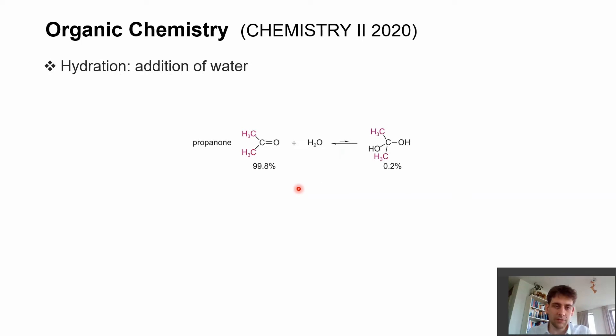Here you see some of these equilibria with numbers. For example, if you use propanone (also called acetone) and put this in water, then only 0.2% of the molecule gets hydrated. So it's actually a very rare phenomenon.